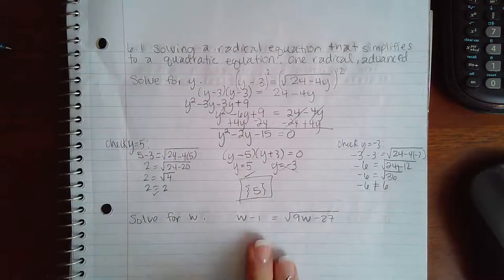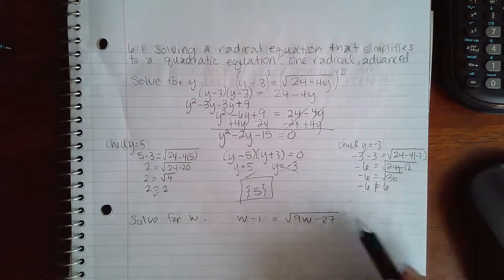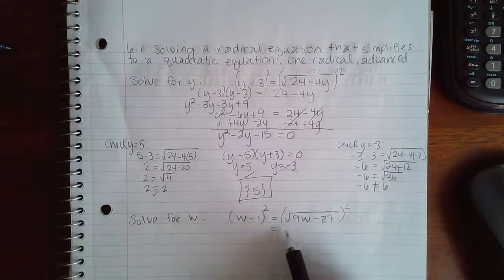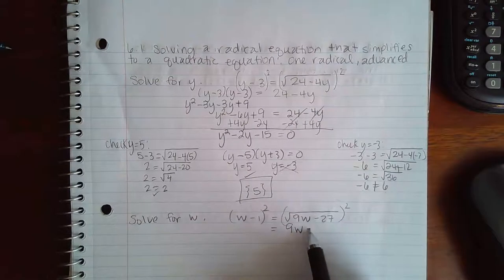Now similarly, I can solve this problem here. The square root is already isolated, so I can square both sides. Now on the right-hand side, the power and the root will undo each other.